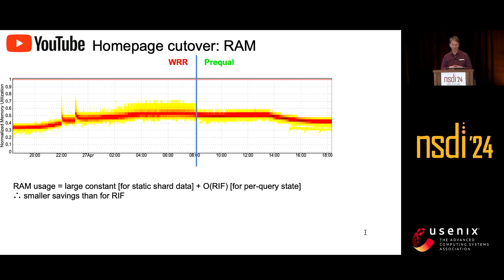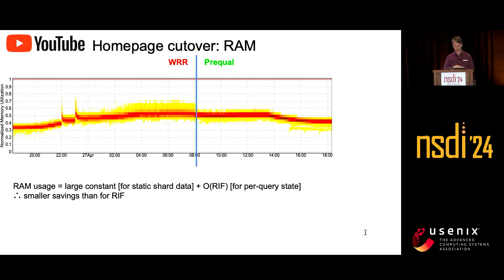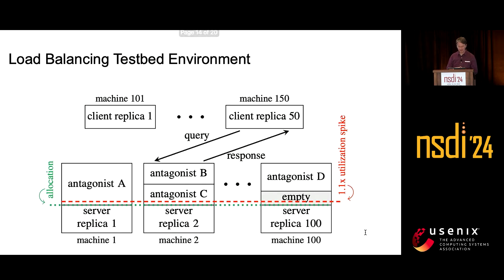One interesting outcome was that we also reduced the RAM footprint of these jobs. When queries occupy memory for processing, if you cut out peaks in the number of queries being processed on a server, you can reduce peak RAM usage as well. So there were actual RAM savings. Now I'll go into some testbed results, which explore various parameters of the algorithm and give intuition of how it works in different circumstances.